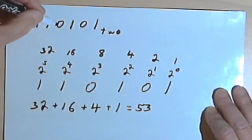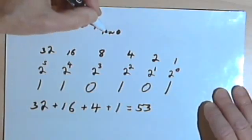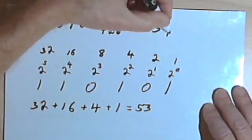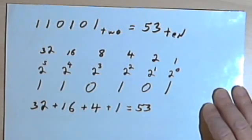So this number, 110101 base-2, is equal to 53 in our base-10 system.